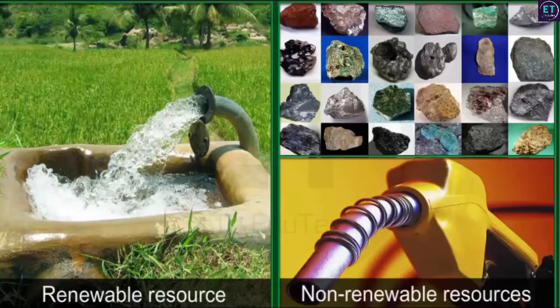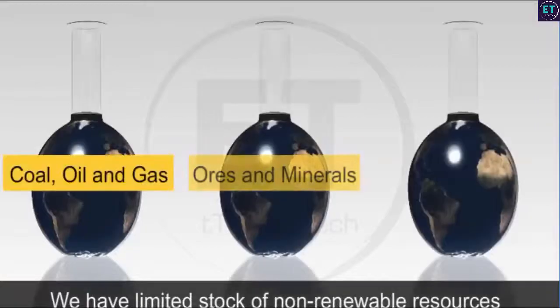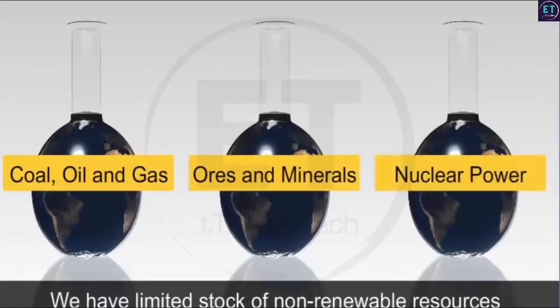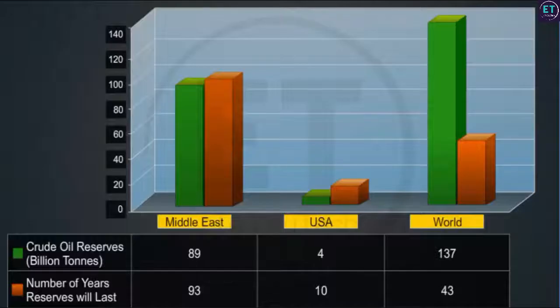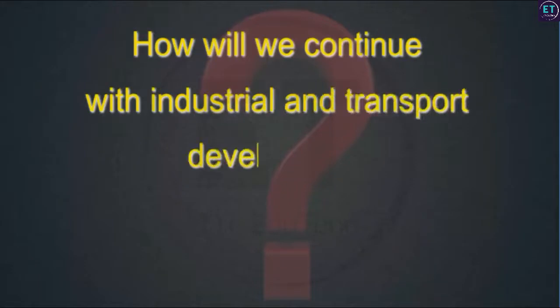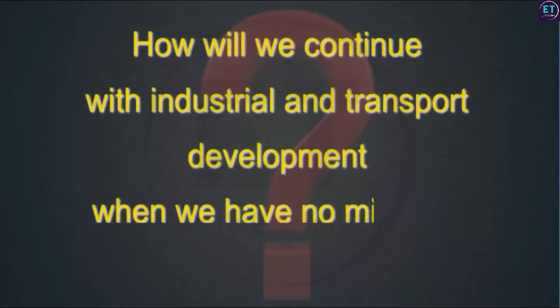We have limited stocks of non-renewable resources that are lost forever once used. The charts here show the available stocks of crude oil and the number of years they will last at their present rate of usage. This brings us to the question: how will we continue with industrial and transport development when we have no minerals and petroleum left?